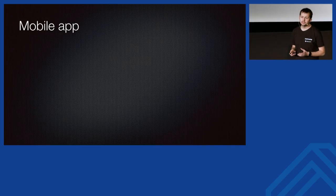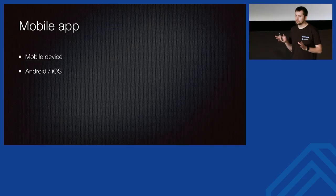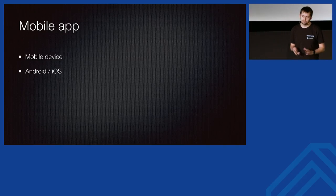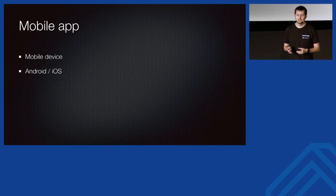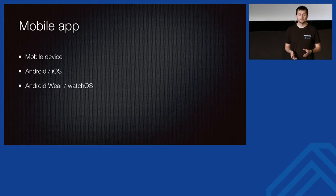First, let's define what I mean by mobile application — it's an application that works on a mobile device. There are two most significant players: Google and Apple, producing Android and iOS. That covers support for phones and tablets, but currently there's also Android Wear and watchOS, which let you write code for smartwatches.